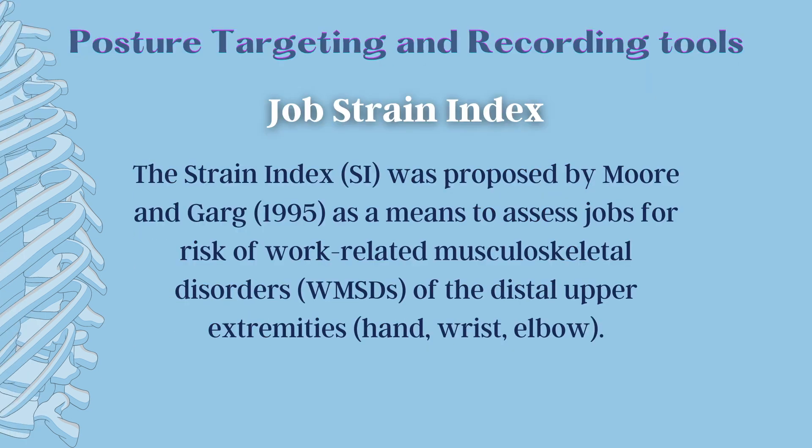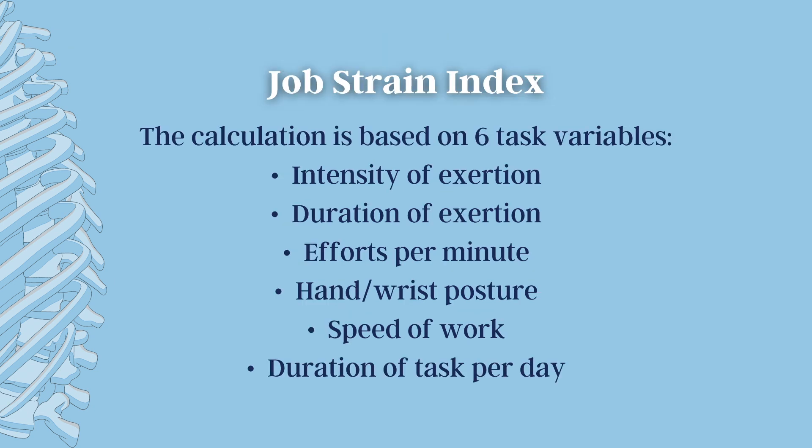The next tool is the Job Strain Index. The Strain Index is a tool used to calculate the risk of developing an MSD in hand-intensive types of work. Repeated tasks with the hands can lead to discomfort in the hands, wrist, and elbows. The Strain Index was proposed by Moore and Garg in 1995 as a means to assess jobs for risk of work-related musculoskeletal disorders of the distal upper extremities — the hand, wrist, and elbow. It was developed using existing knowledge of biomechanics, physiology, and epidemiology, and is used to assess a job, not a person. The calculation is based on six task variables: density of exertion, duration of exertion, efforts per minute, hand or wrist posture, speed of work, and duration of task per day.